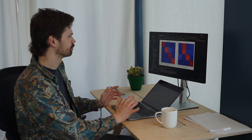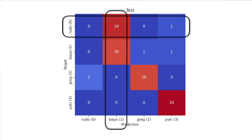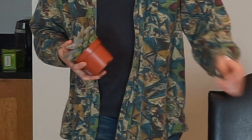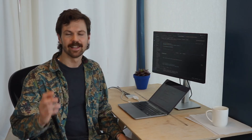Wait a minute — something has definitely gone wrong. We now only have an accuracy of 70%. You can see the mistakes are coming from one plant: the model is misclassifying pictures of Rudo as pictures of Bayer. This must have something to do with changing Rudo's pot.